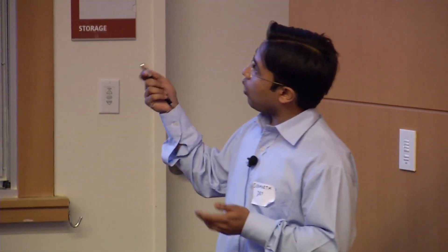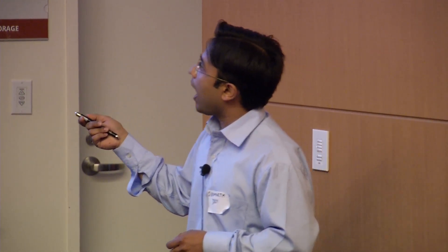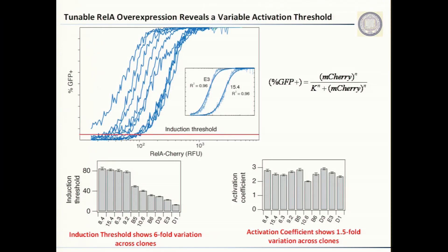To quantify this more carefully, we fitted the data to a Hill's equation and derived two parameters: one we call the induction threshold, the level of transcription factor required to initiate gene expression from the HIV promoter, and the other is the activation coefficient or Hill's coefficient, which is a measure of increases in gene expression once transcription is initiated. As you can see from these sigmoids, which are essentially parallel to each other, the activation coefficient across all clones was fairly flat, whereas there was a six-fold difference in the induction threshold. This suggests that integration into different chromatin locations results in differences in the level of REL-A required to initiate gene expression.